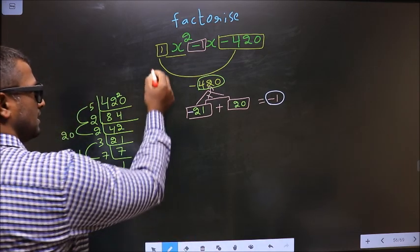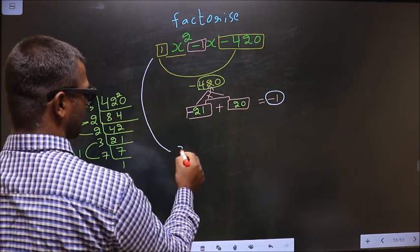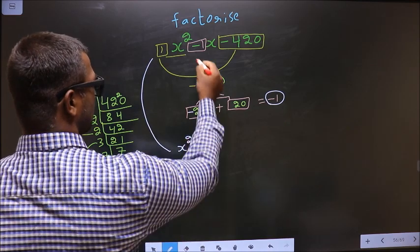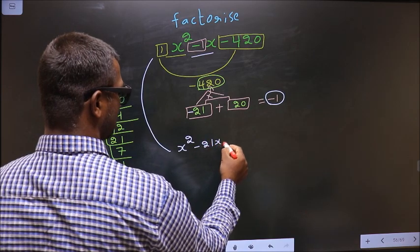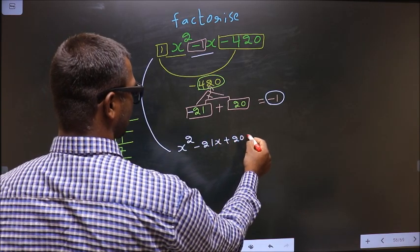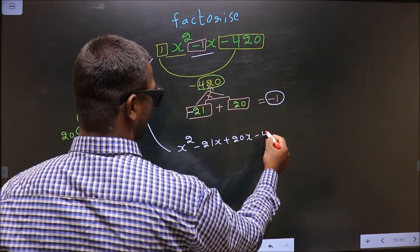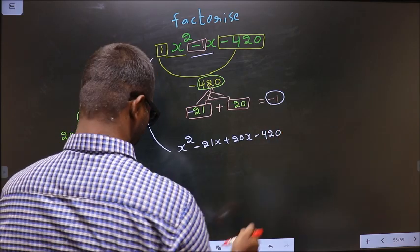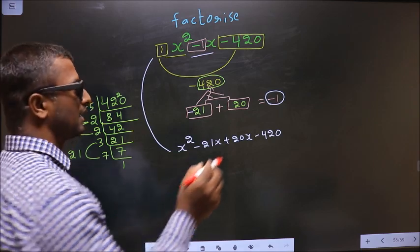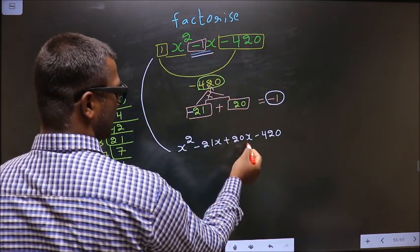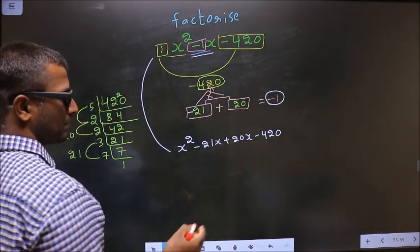Now you change this. In place of -1x now I should write this: -21x + 20x - 420. Did you understand? In place of -1x I have written this. Next.